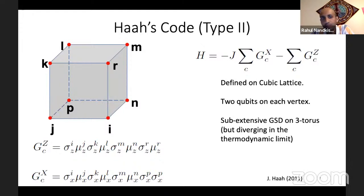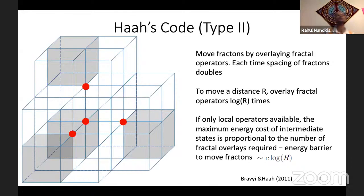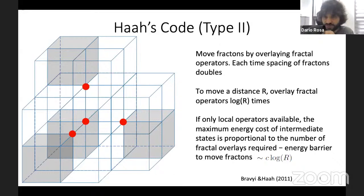The only way to actually move one of these cube excitations without creating additional excitations is to expand or contract or otherwise deform this entire membrane — but that's an extremely non-local operation. So you cannot move these cube operators by doing only local dynamics, at least not without creating additional excitations. That's one example. There are other kinds of fracton models, like Haas code, where you move excitations by essentially creating fractal patterns of operators, and the energy barrier grows logarithmically with the linear size of the pattern.